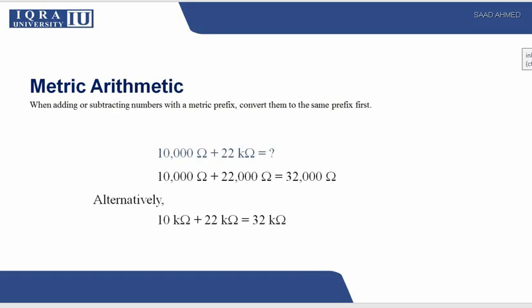If you want to add 10,000 ohms plus 22 kilo ohms, then you can simply convert those 22 kilo ohms into ohms by multiplying it by 1000 and you will get 22,000 ohms. Just add to get 32,000 ohms, and if you want to convert it you can just divide by 1000 and you will get 32 kilo ohms.